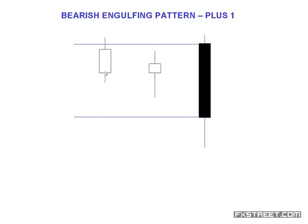Point number two: we're not interested in whether the plus-one bar was an up day or a down day. In order to have the bearish engulfing pattern itself, we do need a downward day to engulf an upward day — but the plus one and other plus days after that do not matter whether they're up or down. I'll clarify that by showing you more examples.